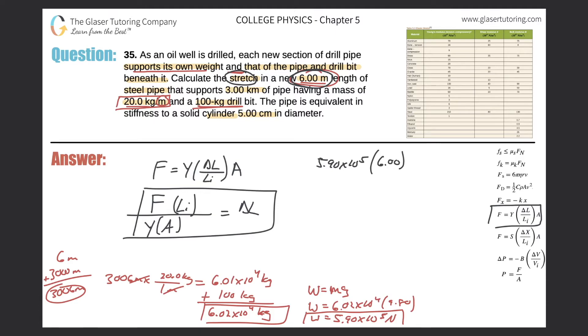That whole thing is now divided by Young's modulus. We're talking about a steel pipe here, so we got to go to our table, find steel. And here's Young's modulus, 210 times 10 to the 9.